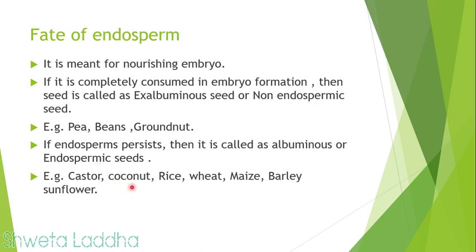Rice, wheat, maize, and barley — all monocot seeds — are endospermic seeds. In dicots, the best example of an endospermic seed is castor (arundi). We have now finished discussing how endosperm is formed, the fate of endosperm, double fertilization, syngamy, and the formation of the primary endosperm nucleus.